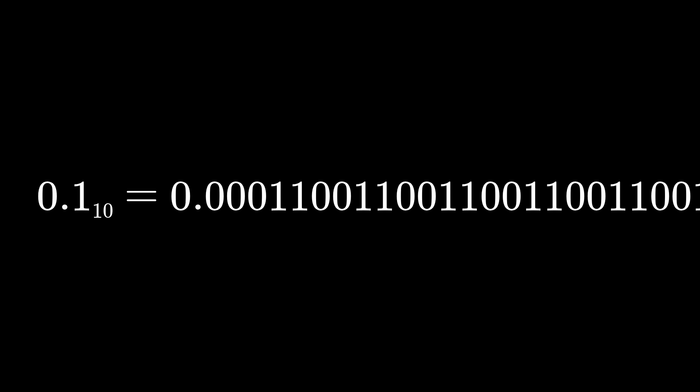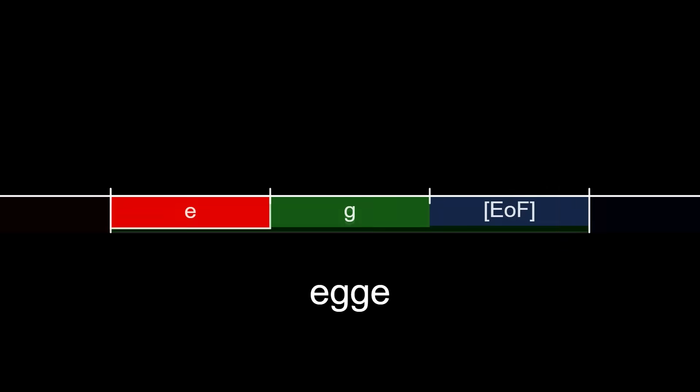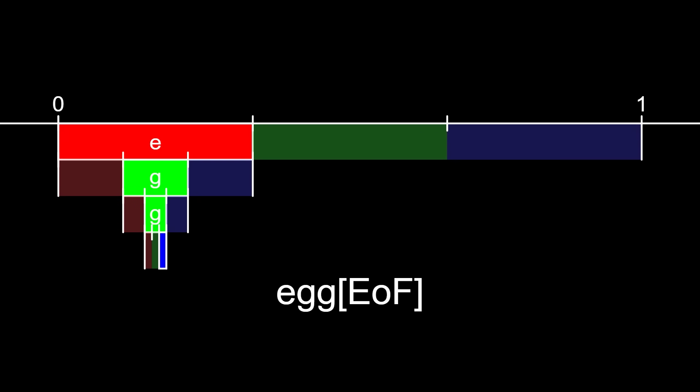There's a problem, though. Not all numbers can be represented in finitely many bits. For example, 1 tenth has an infinite binary expansion. The way you fix this is by adding a new symbol to the alphabet, the end of file or end of message. When you reach an end of file, you stop subdividing the range. So each end of file section represents one full message. Then the encoder can just output any binary number that lies within the end of file section for a particular message.